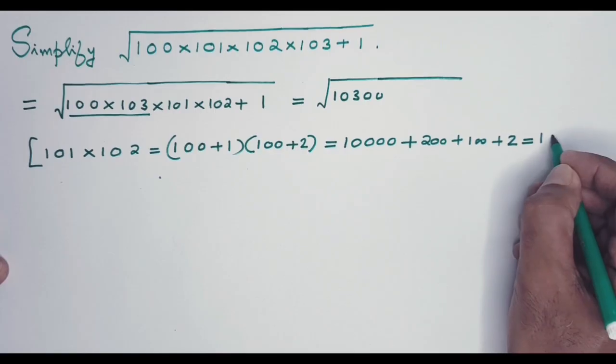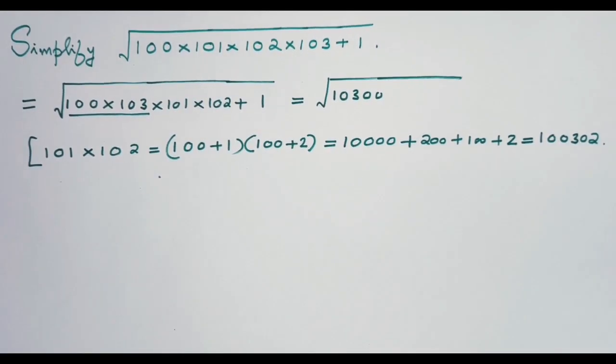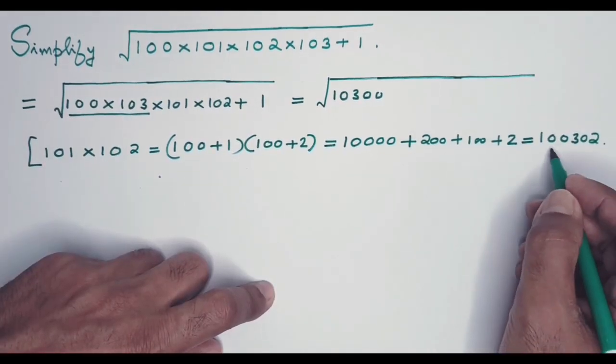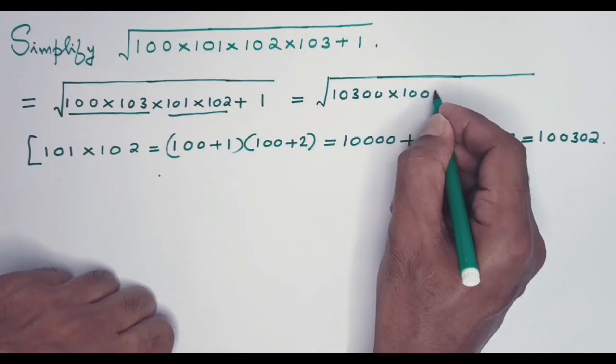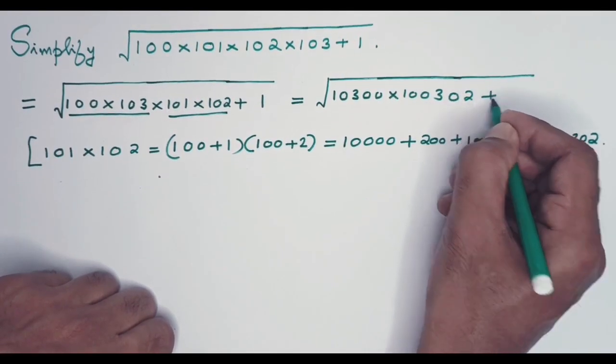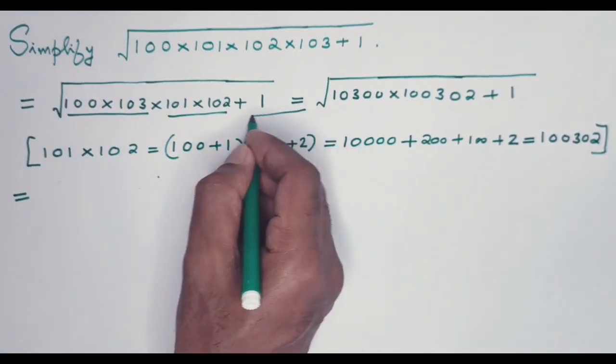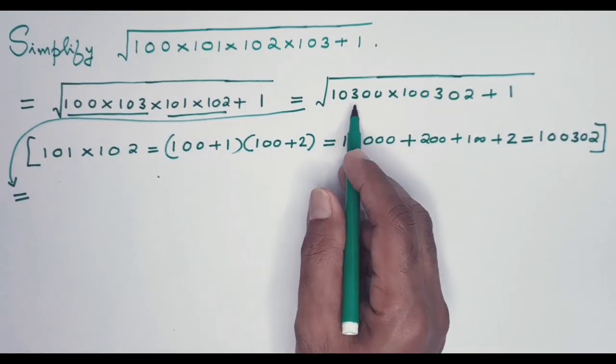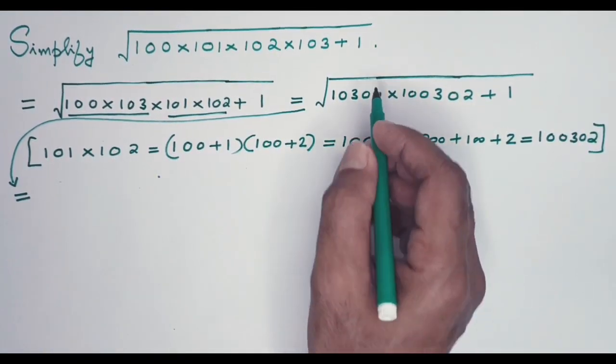100 plus 200 plus 100 plus 2 gives us 10,302 as product of 101 and 102. So 10,300 times 101 times 102 is 10,302. Let me substitute this. So we have 10,300 multiplied by 10,302, then there is this plus 1. This is equal to... See, I can put it in a different way.